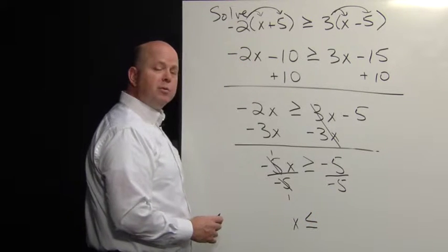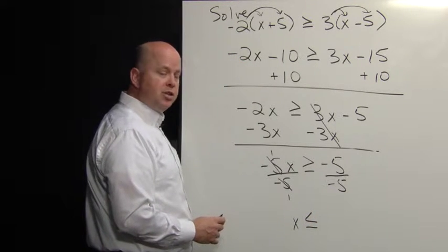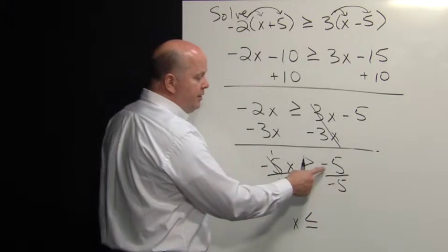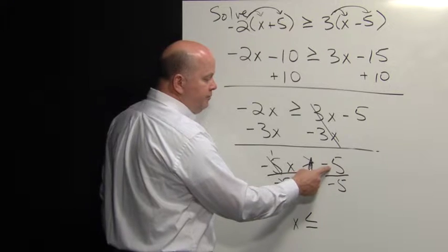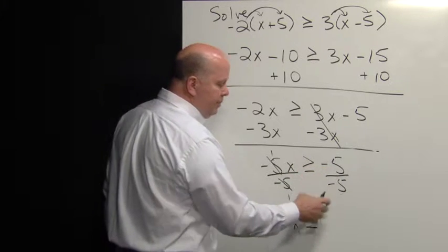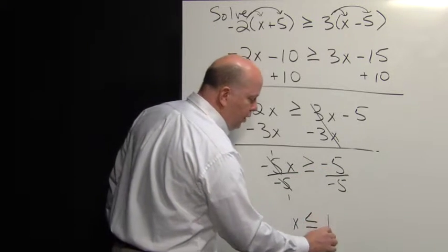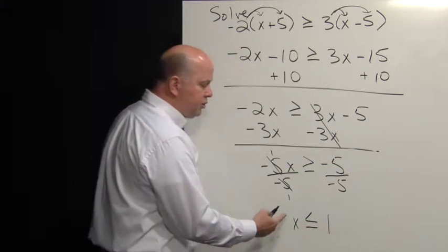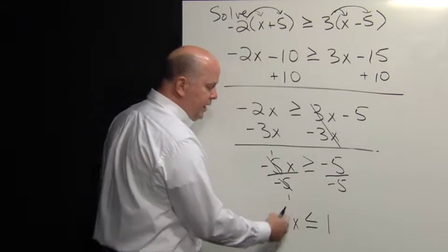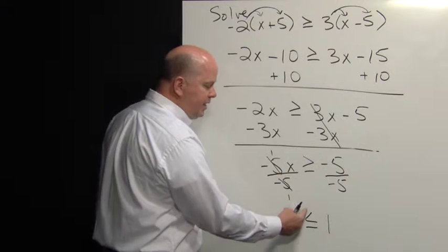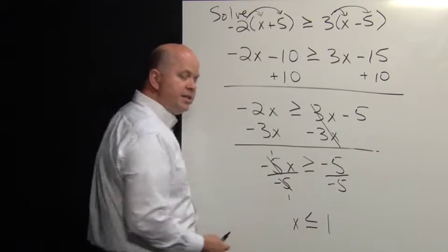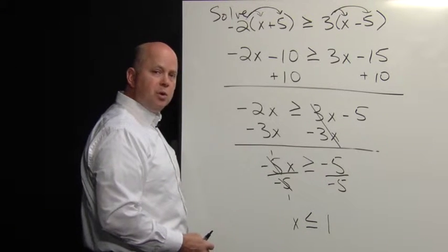We must reverse the direction. Negative five divided by negative five is one. So our solution set is X is less than or equal to one.